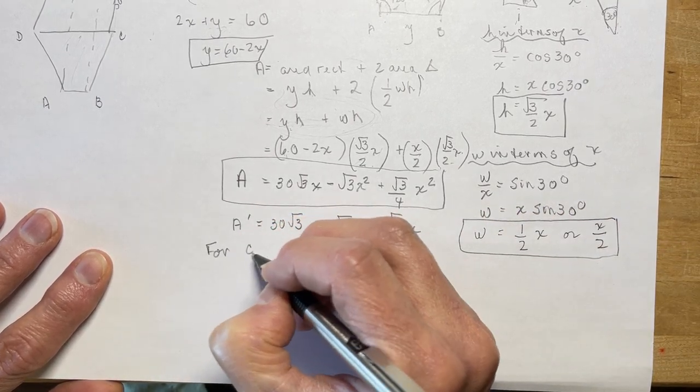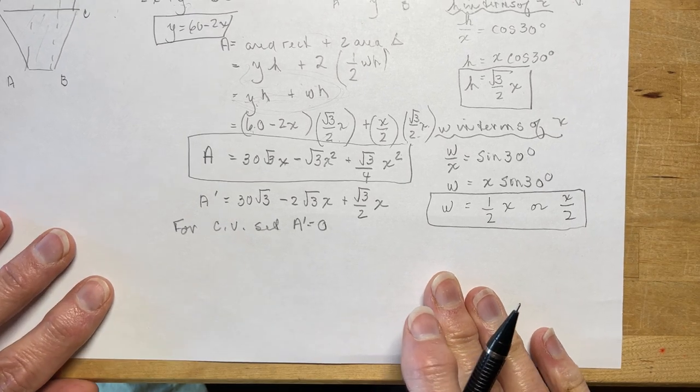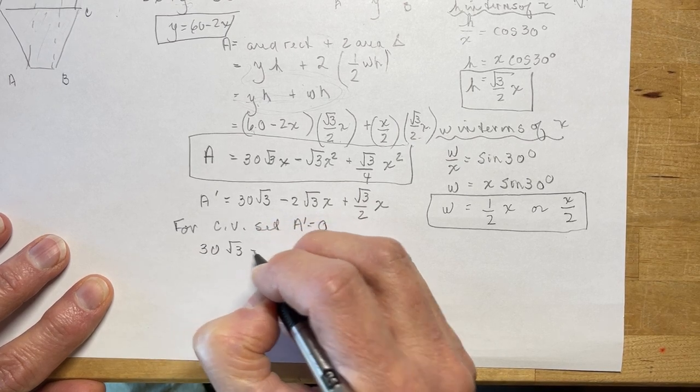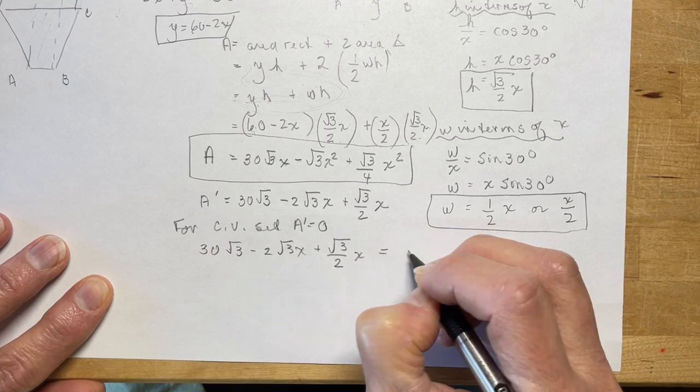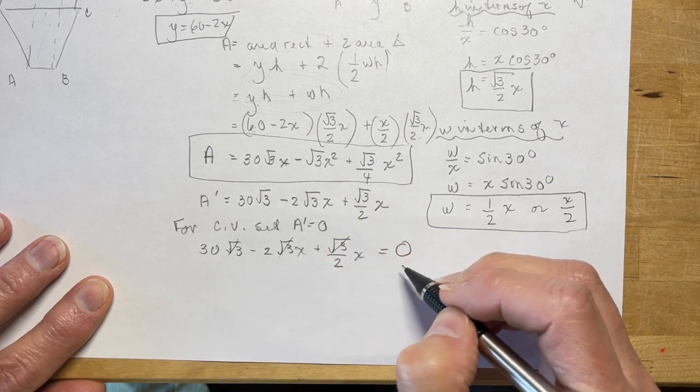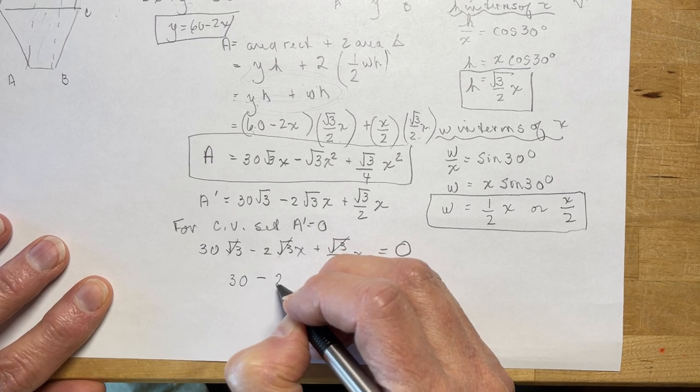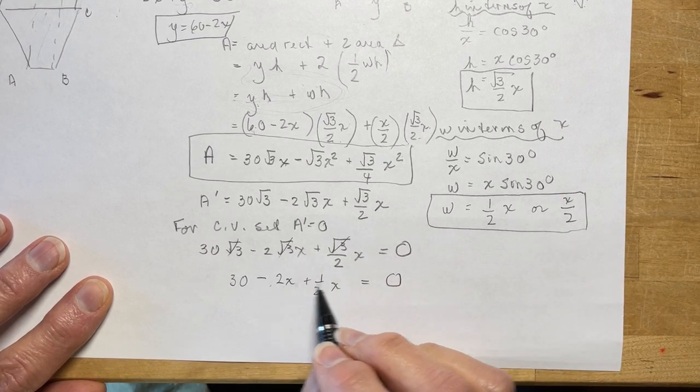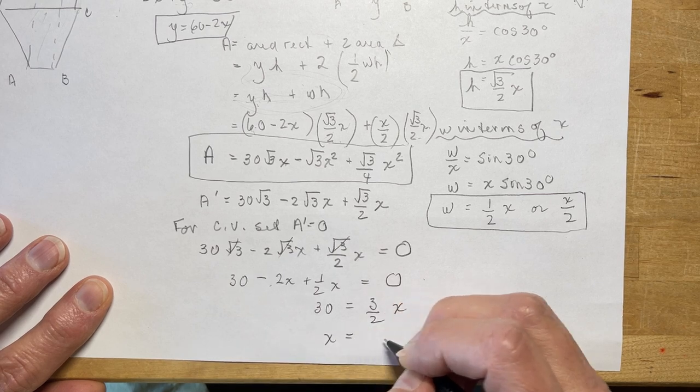Okay, so for critical values we're going to set A prime equal to 0. So 30 root 3 minus 2 root 3x plus root 3 over 2x equals 0. You can see that root 3 is a common factor to all three terms, so I'm just going to cross those out. So what am I left with now? I have 30 minus 2x plus 1 half x is equal to 0, and that would give me minus 3 halves. So 30 is equal to 3 halves x, and x is equal to 20.